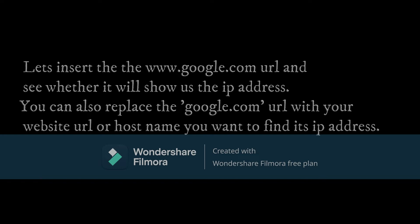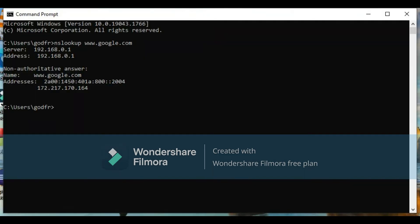Let's insert the www.google.com URL and see whether it will show us the IP address. You can replace the google.com URL with your website URL or hostname you want to find its IP address. As you can see, it displays the IP address of the URL.